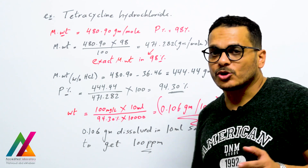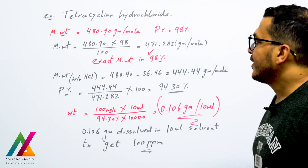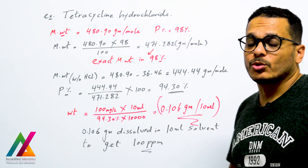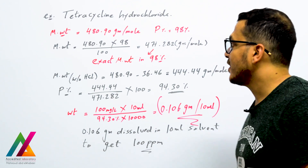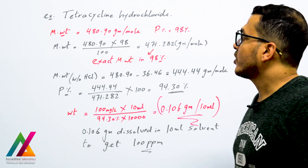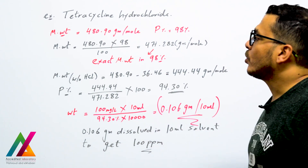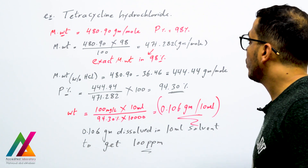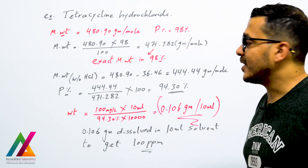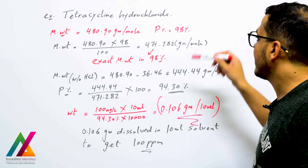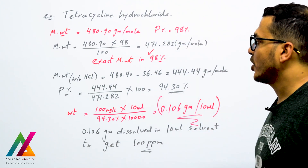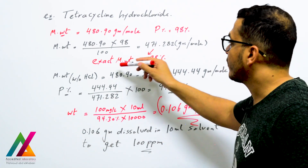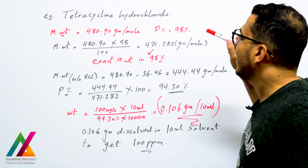In this example, we have tetracycline hydrochloride, which is an antibiotic. The molecular weight of this compound is 480.9 g/mol, and the purity as found in the certificate is 98%. You will first calculate the exact molecular weight for this compound at 98% purity.